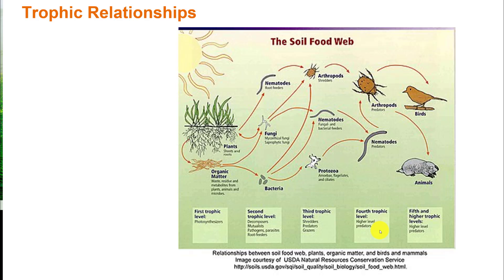At the fourth level, we have higher-level predators — birds preying on arthropods, which in turn prey on smaller arthropods. At the highest level of a trophic relationship are the high-level predators, which tend to be mammals. Humans are almost always a high-level predator in any food web they are involved in.